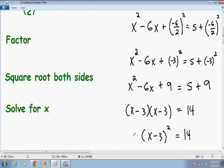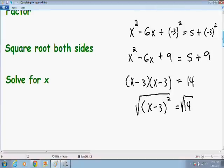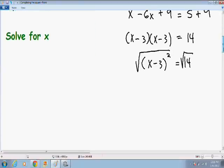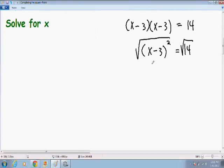And our last step is we need to solve for x. So in other words we need to get x by itself. So in order to get x by itself I want to get rid of this 2 exponent right here. So in order to get rid of this 2 exponent I'm going to do the opposite. So the opposite of a square is a square root and I'm going to square root both sides. The square root of a square is just itself so that simplifies just to x minus 3